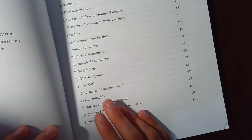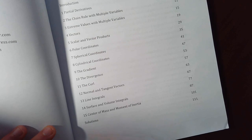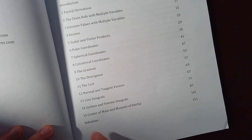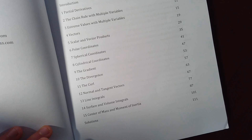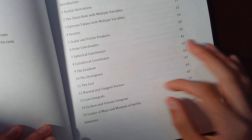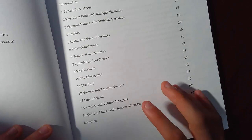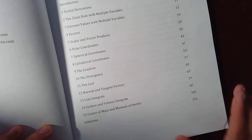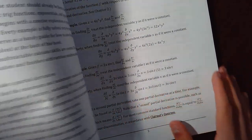What else? We have normal and tangent vectors. Those are quite good. Line integrals, basically integrating over a particular path. Those are very important. And for the last two chapters, it's got surface and volume integrals, center of mass, and moment of inertia. I think there's one more bit. No, there is no one more bit.